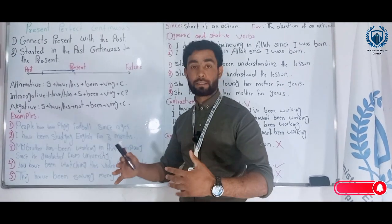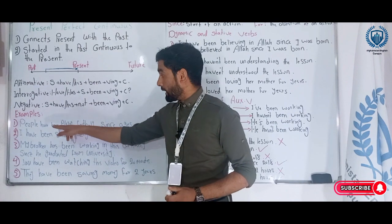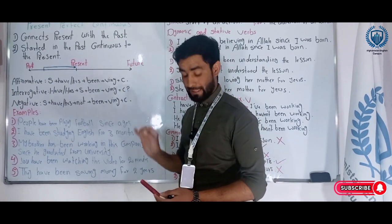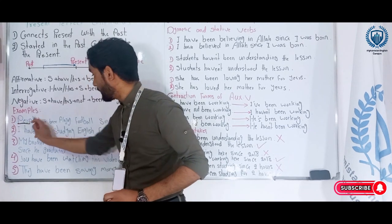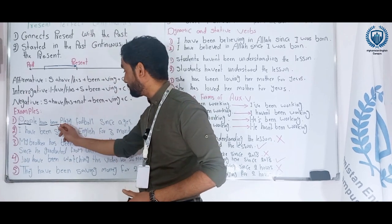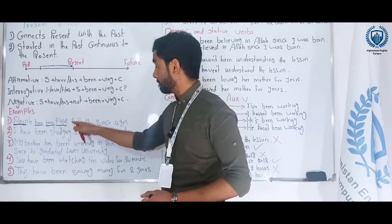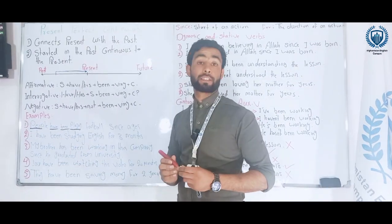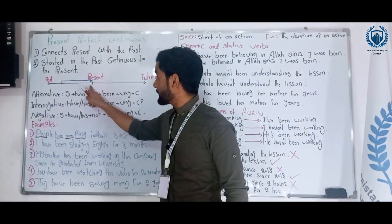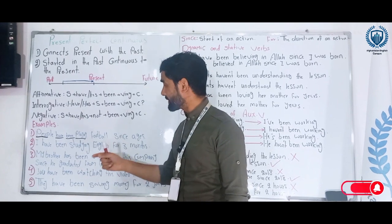Let's look at examples. The first sentence: 'People have been playing football since ages.' The subject is 'people,' then the auxiliary verb 'have,' then 'been,' then the verb-ing form 'playing,' then the complement. It means the action started in the past — since ages means from long ago — comes to the present, and may or may not continue into the future.